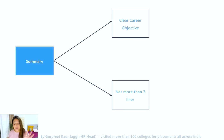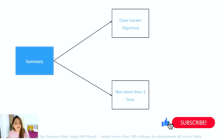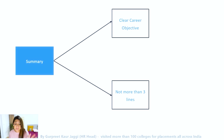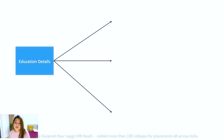The next section is your summary, which is essentially your career objective. This should not be more than two to three lines — keep it clear and crisp. Do not write long paragraphs. The more concise it is, the better. This is not the section you should focus most of your energy on; there are other more important sections in your CV that we're about to discuss.